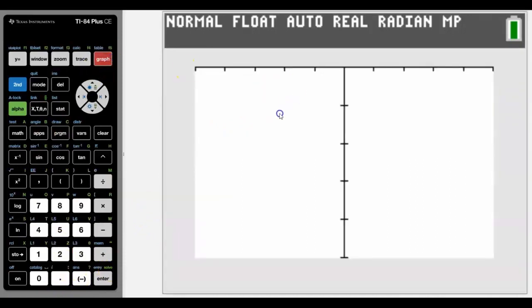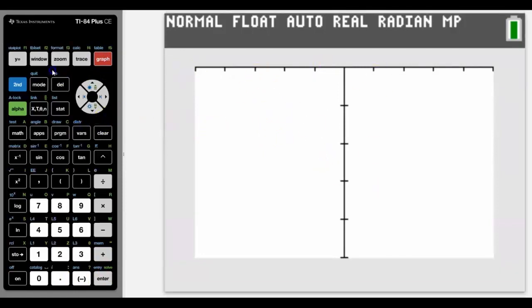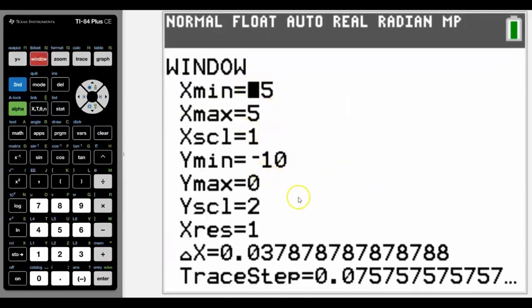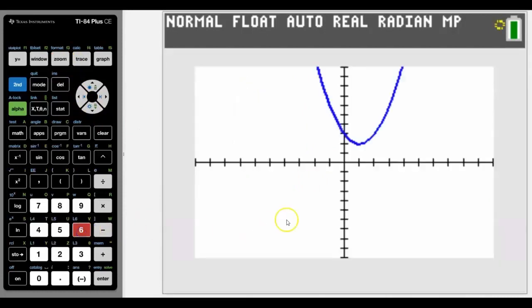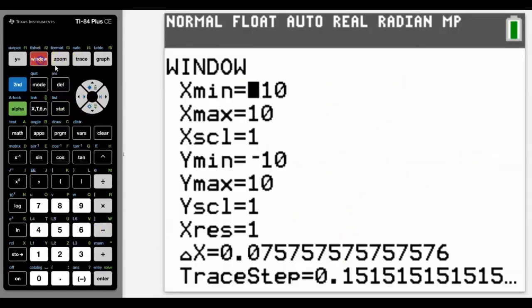Press graph. It's not there, why is that? The reason is that the window's in the wrong place. We can see the window is set in a completely different position. The regular window that we'd have set is zoom standard, which is number six. That will give us negative 10 to 10 in both directions, and we can see now it's going to give us this graph.